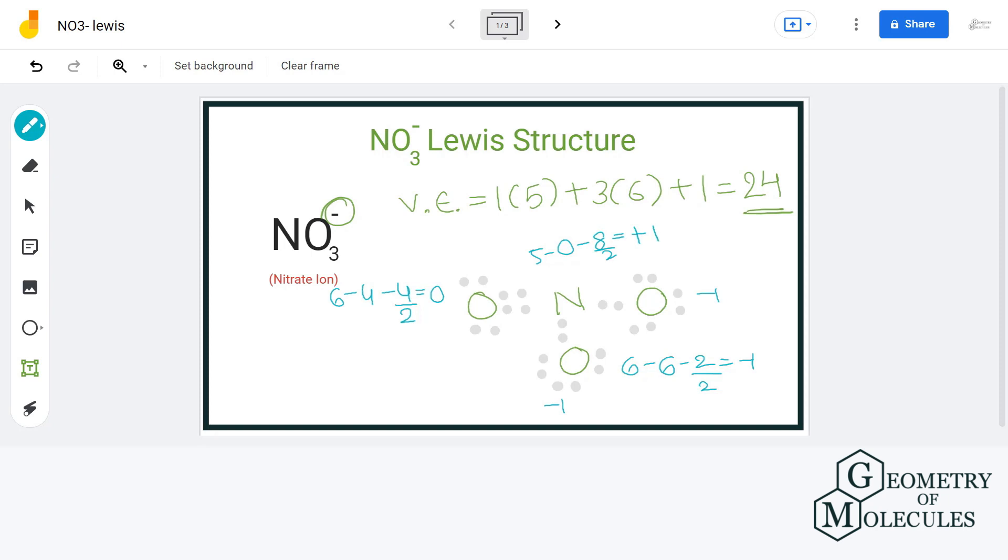If we add the formal charges, we'll get the value of minus one, which is the overall charge of the ion. Also, as NO3 minus is an ion, we will enclose it within a bracket. So this is the final and correct Lewis structure of NO3 minus ion.